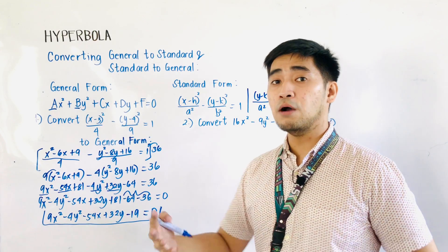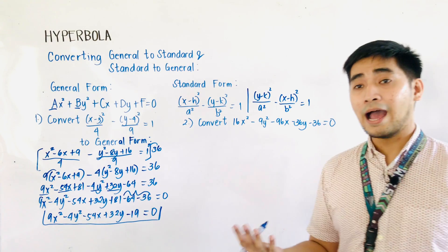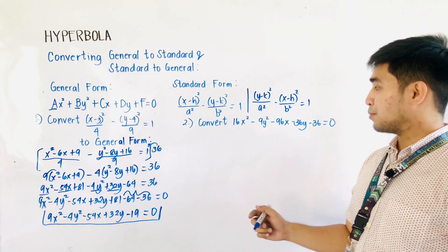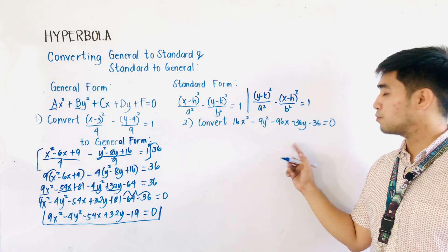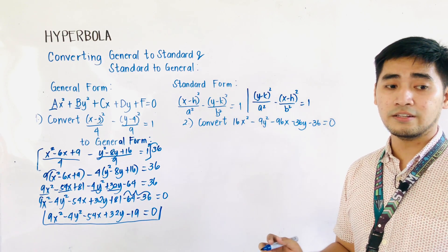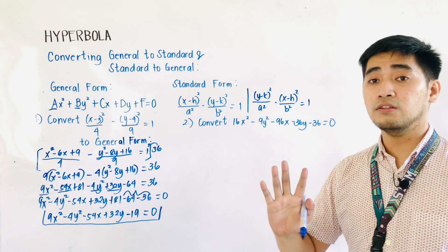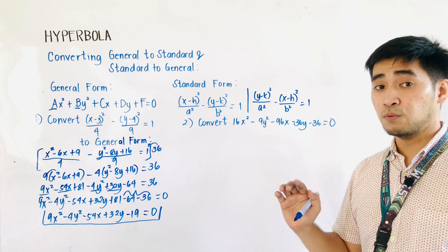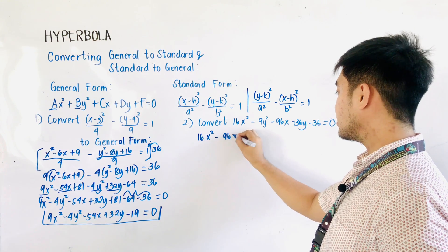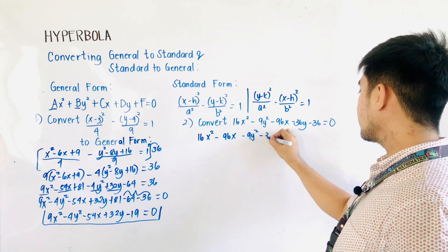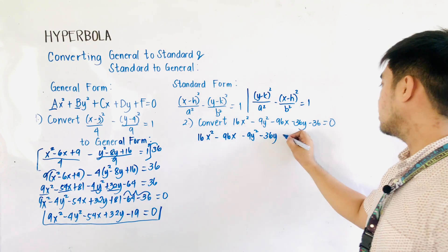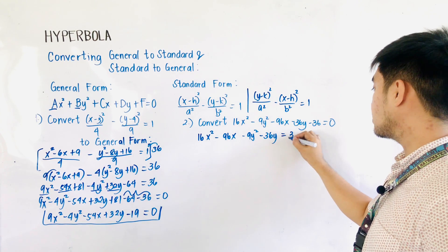For the second example, we are asked to convert 16x² − 9y² − 96x − 36y − 36 = 0 into standard form. To do this, we group the x-terms and y-terms together: 16x² − 96x − 9y² − 36y, and transfer the constant −36 to the right side, giving +36.